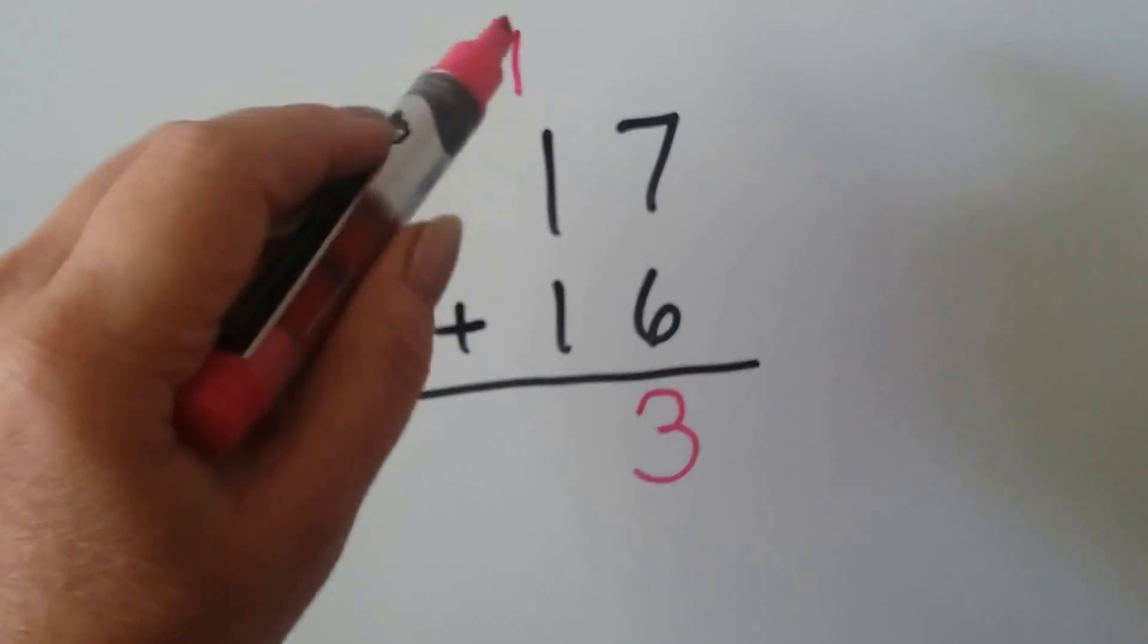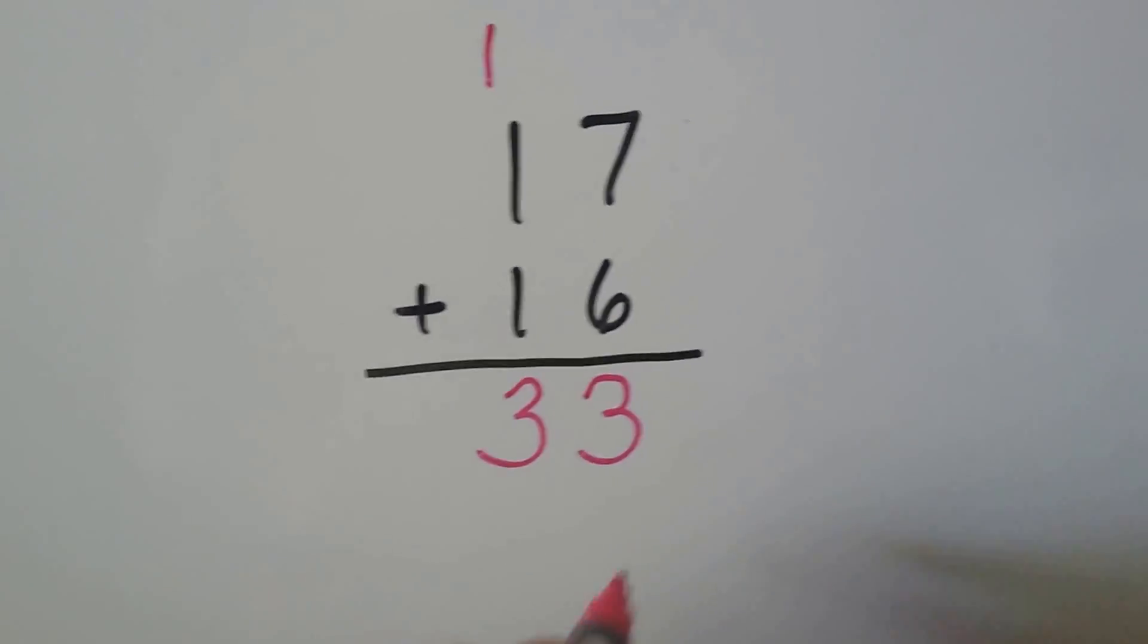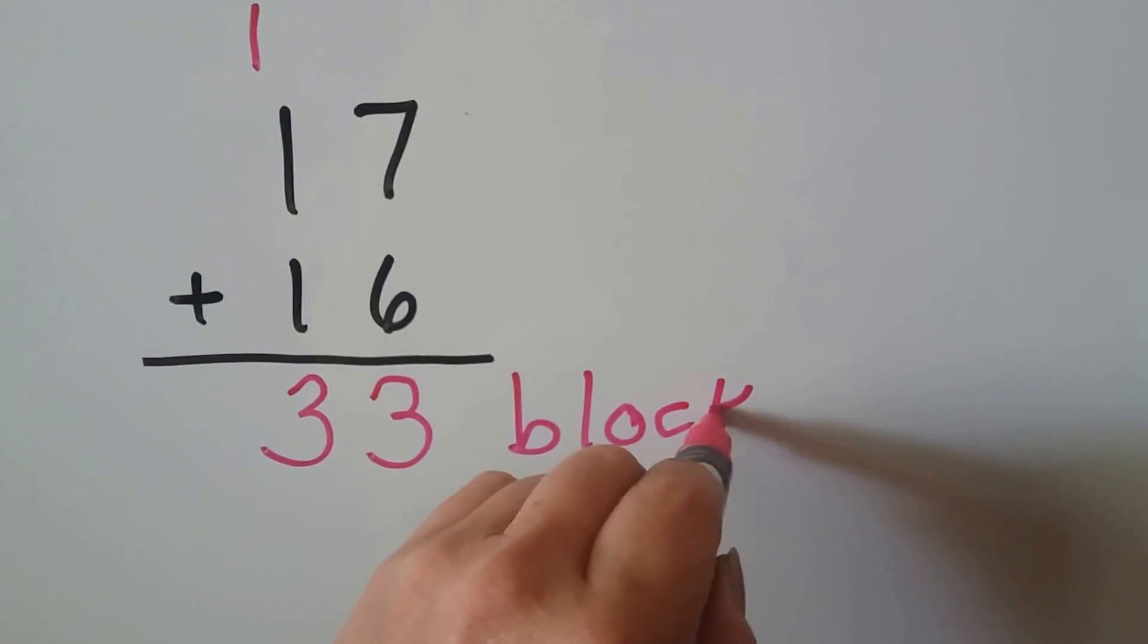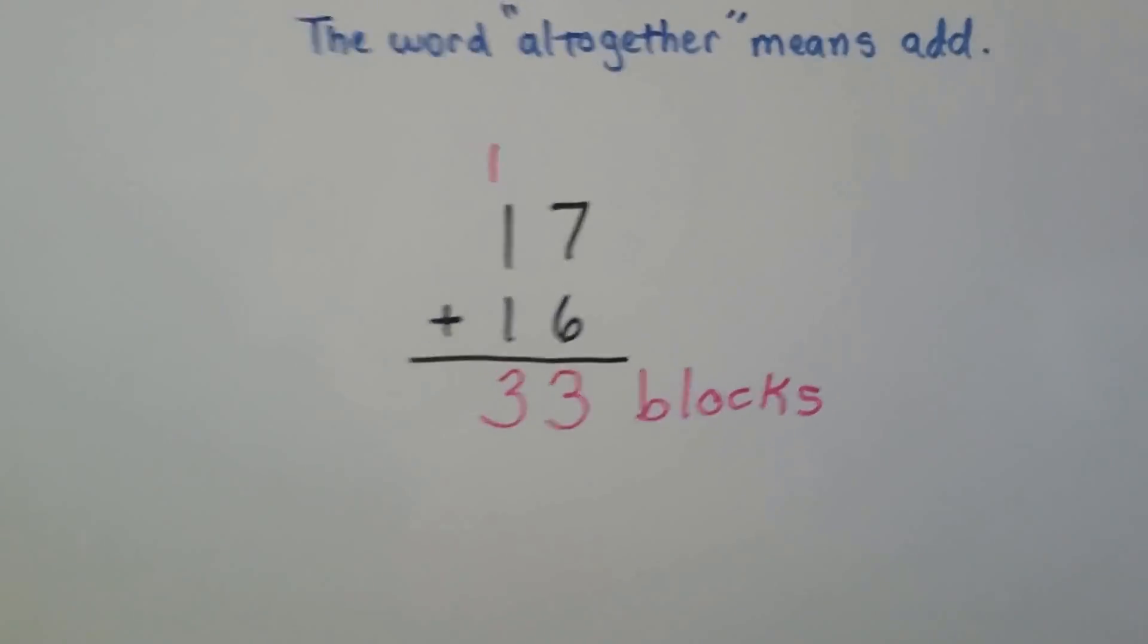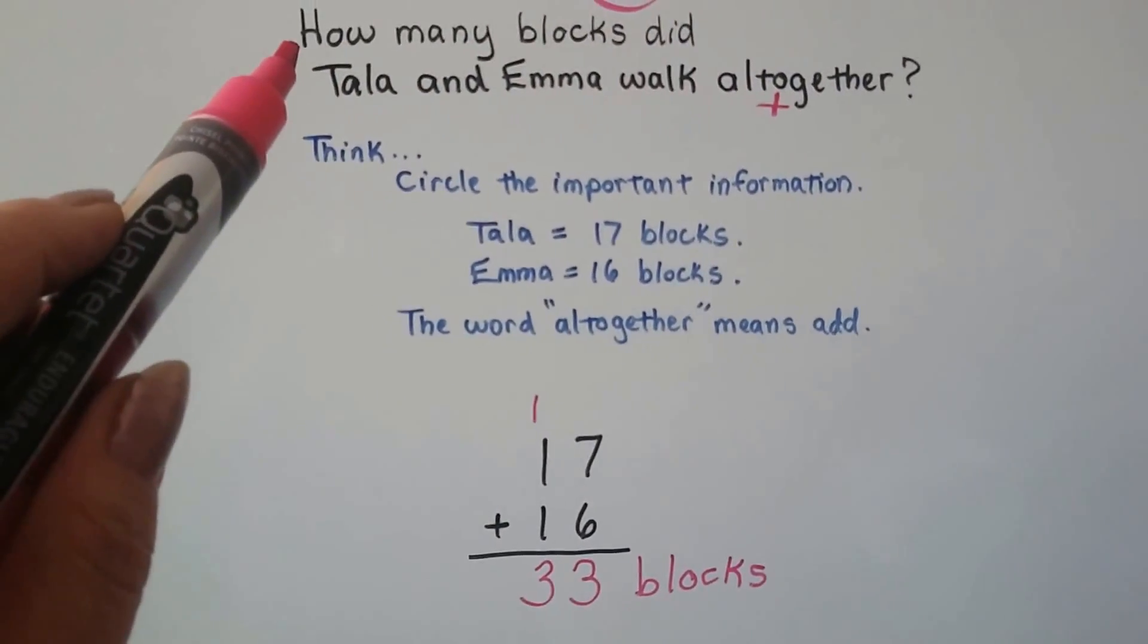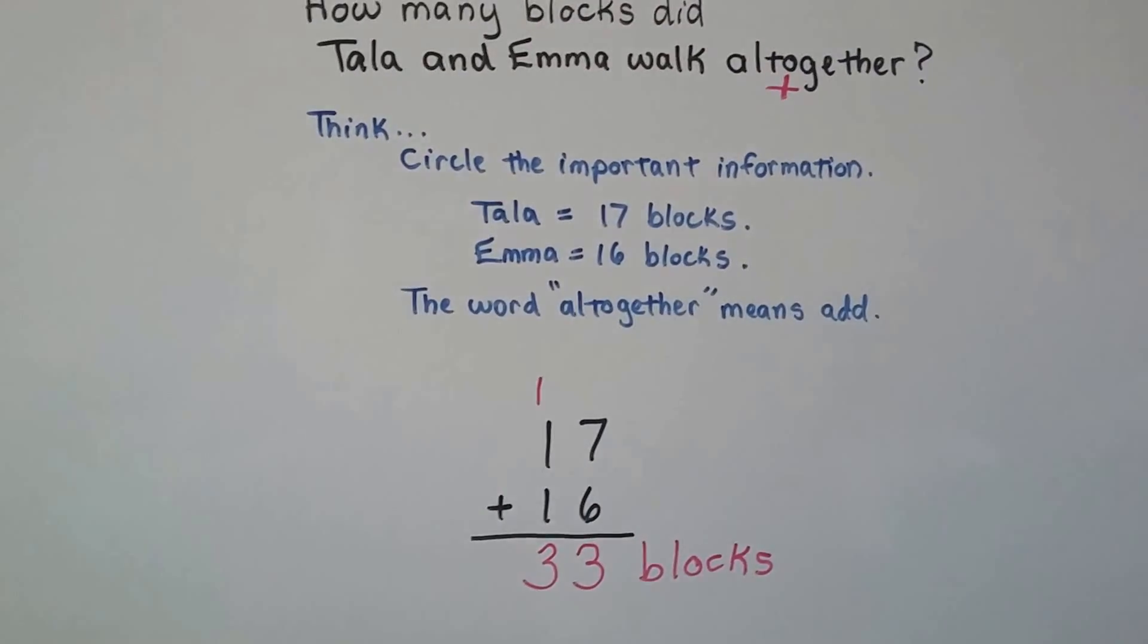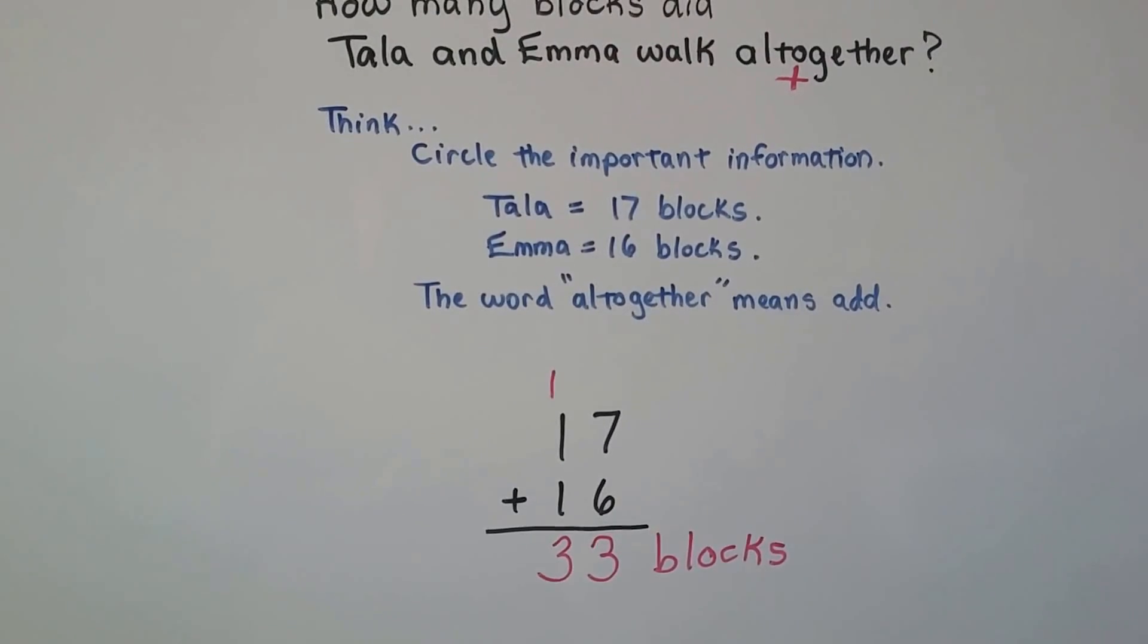Now we add the tens place: 1, 2, 3. And we know we need to label our word problems. So it would be 33 blocks. We have to make sure we add the label to it. It said, how many blocks did Tala and Emma walk all together? 33 blocks.